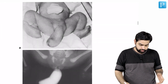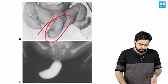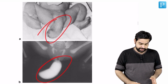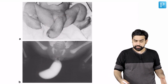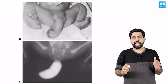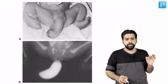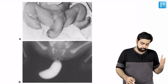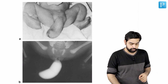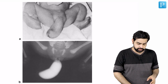A megalourethra appears as the entire phallus dilating during voiding. This is what megalourethra looks like — an image may be shown in exams. It is more common in Prune Belly Syndrome but can occur in other conditions as well.